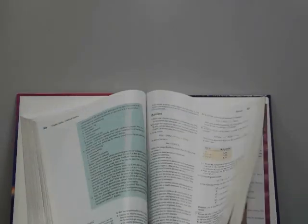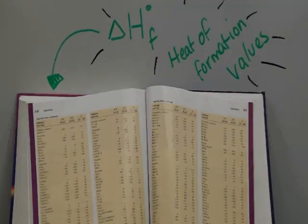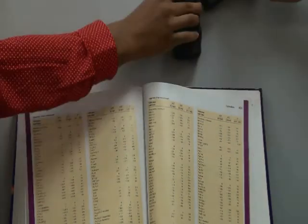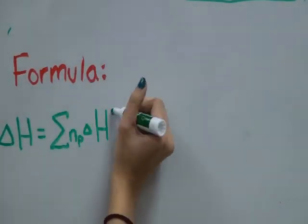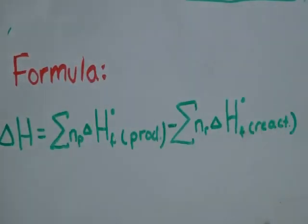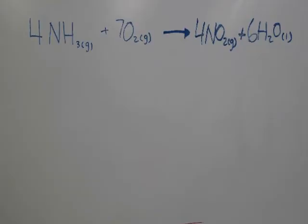So, how do you use this to find the enthalpy of a reaction? All you gotta do is look up the values in the back of your annoyingly huge AP Chem textbook. For each substance, do the sum of the product minus the sum of the reactant. Let's do an example.